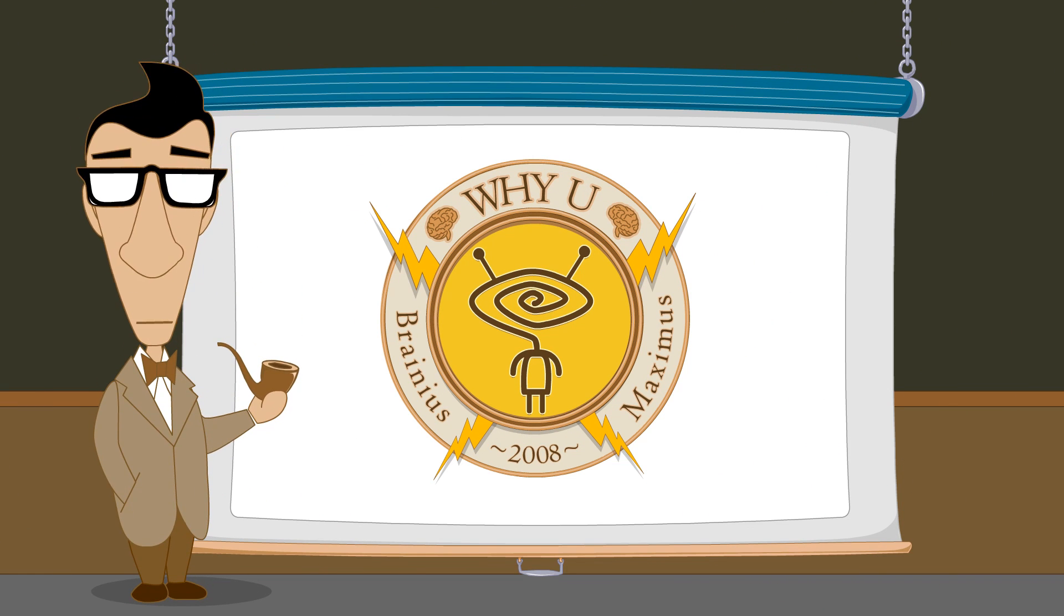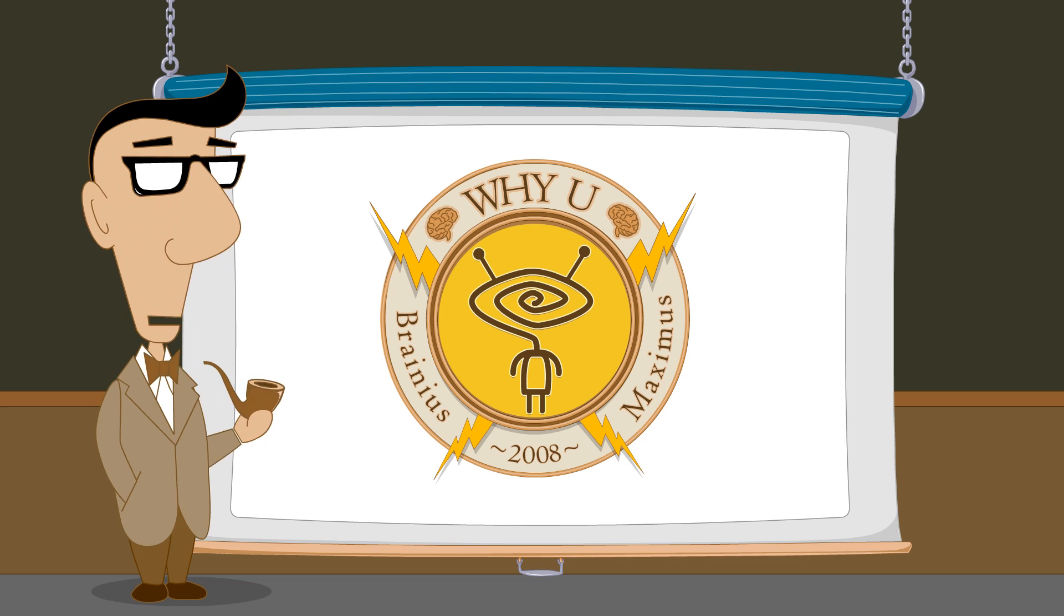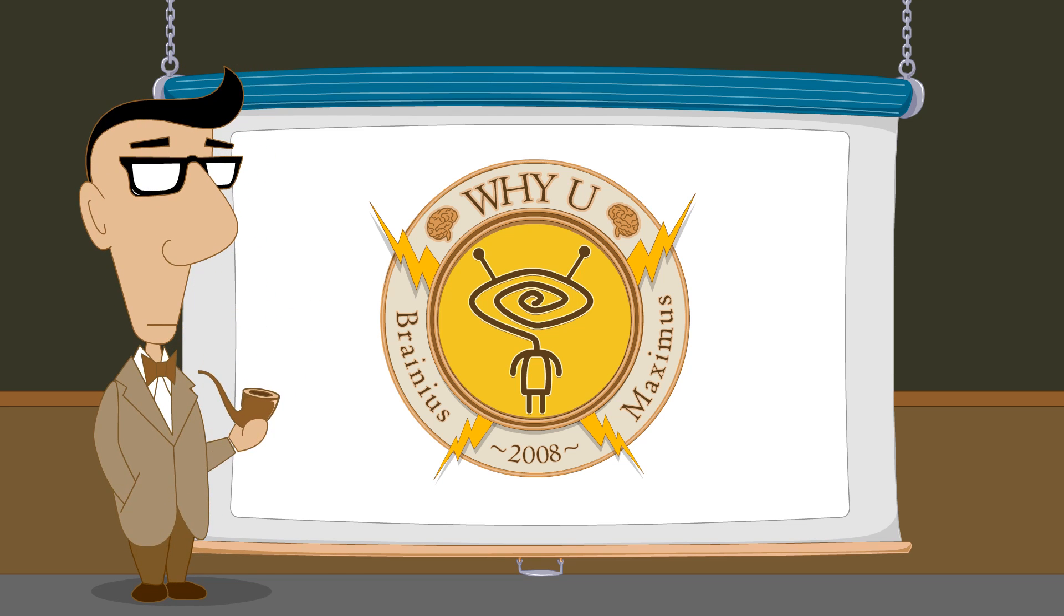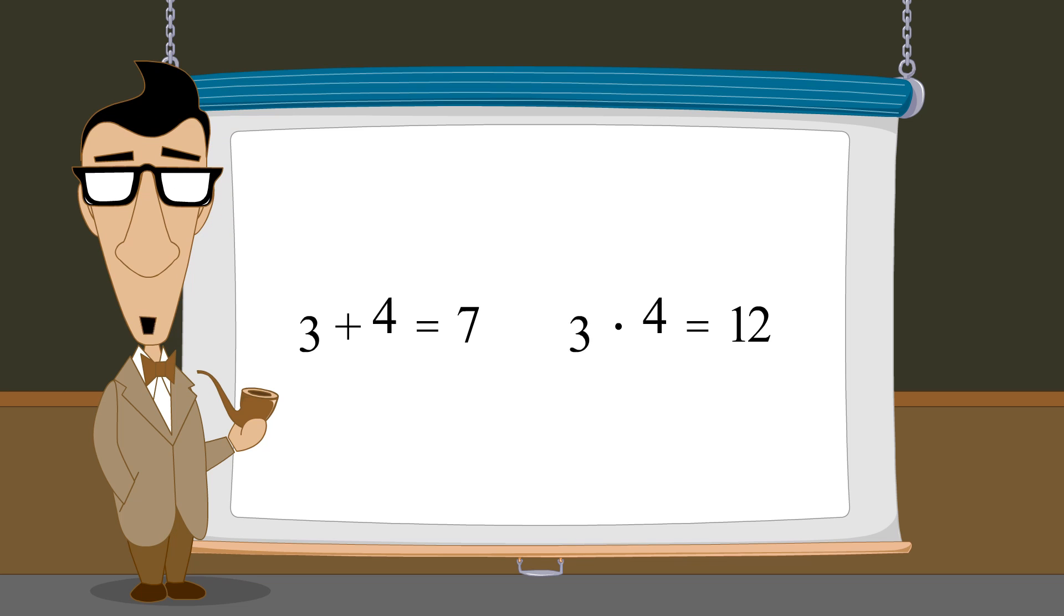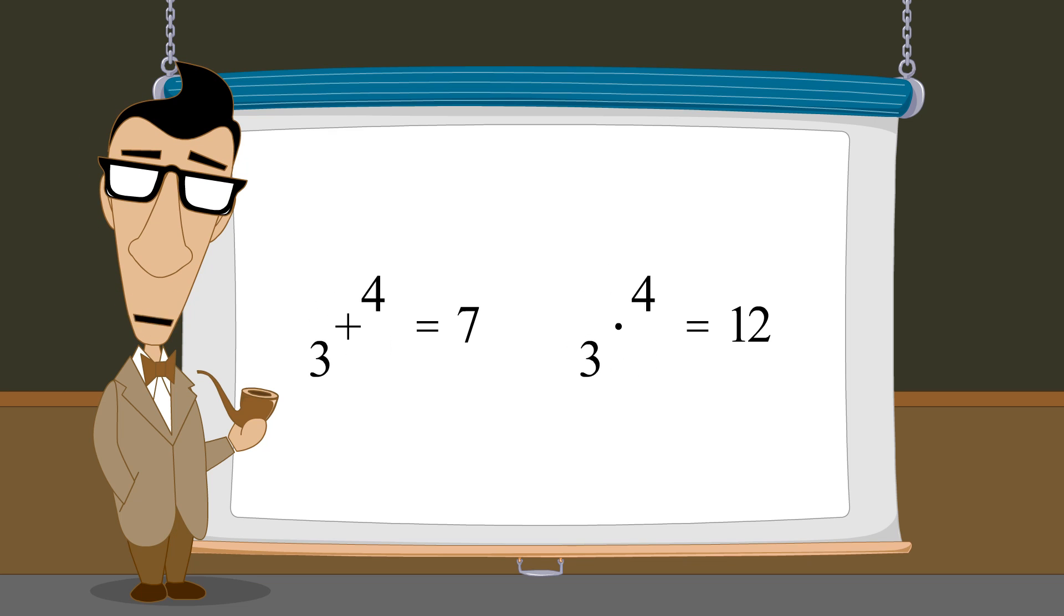Hello, I'm Professor Von Schmohawk, and welcome to Why U. In our last lecture, we saw that addition and multiplication are both commutative operations. The order of numbers which are added or multiplied can be rearranged without affecting the result.